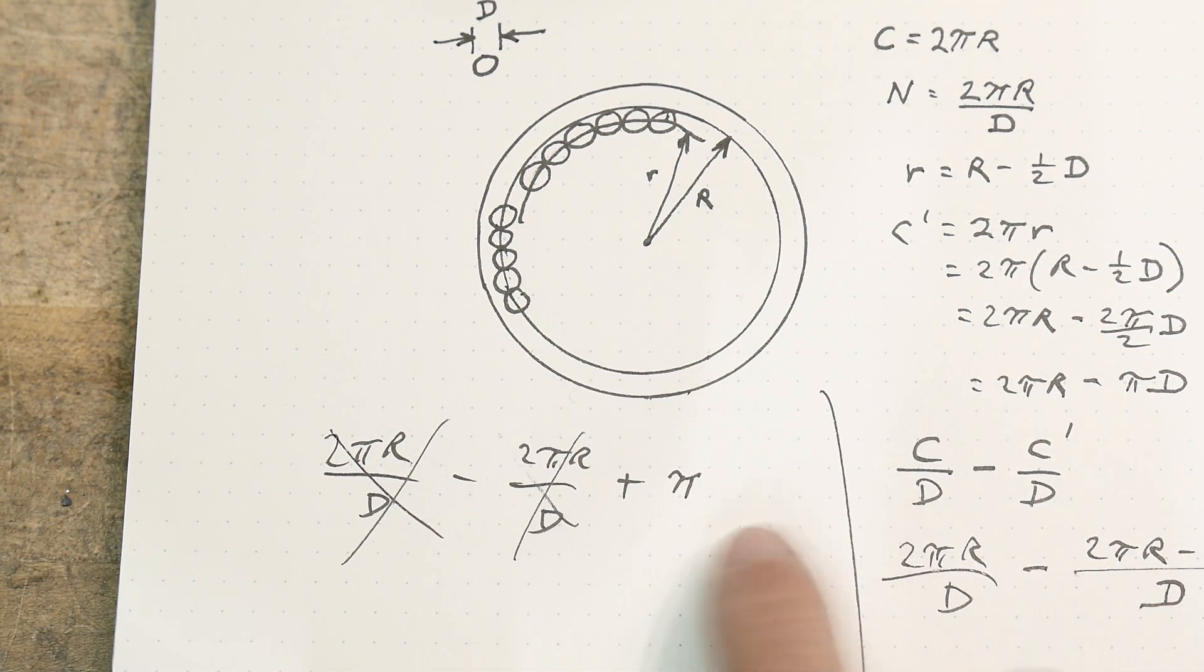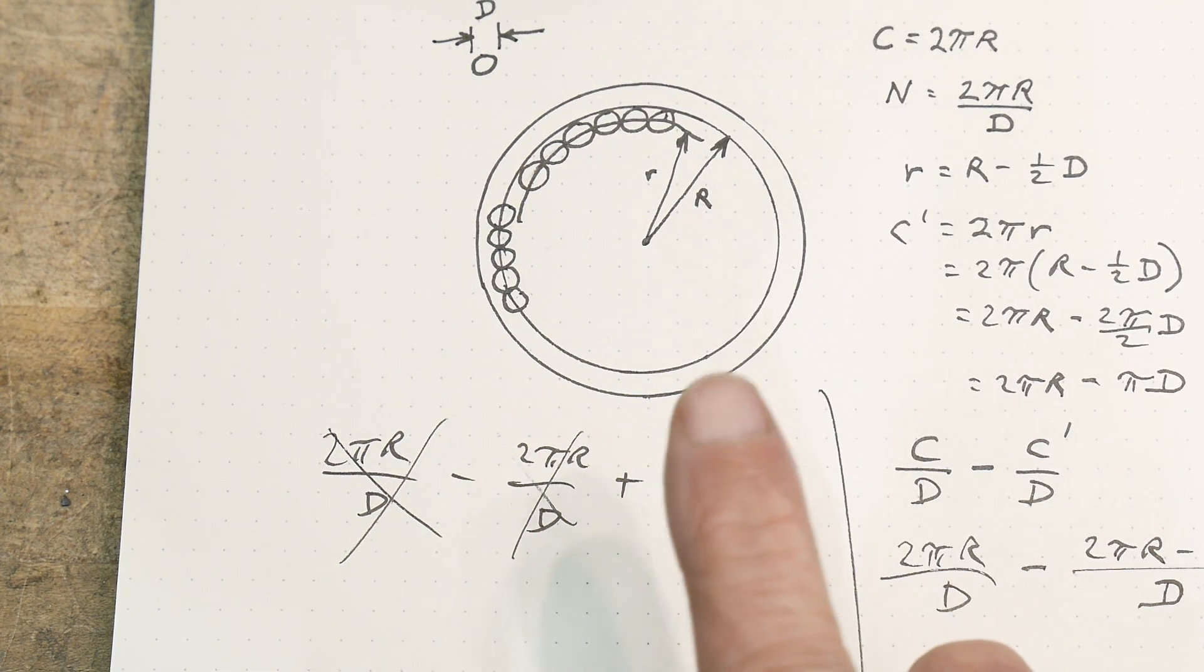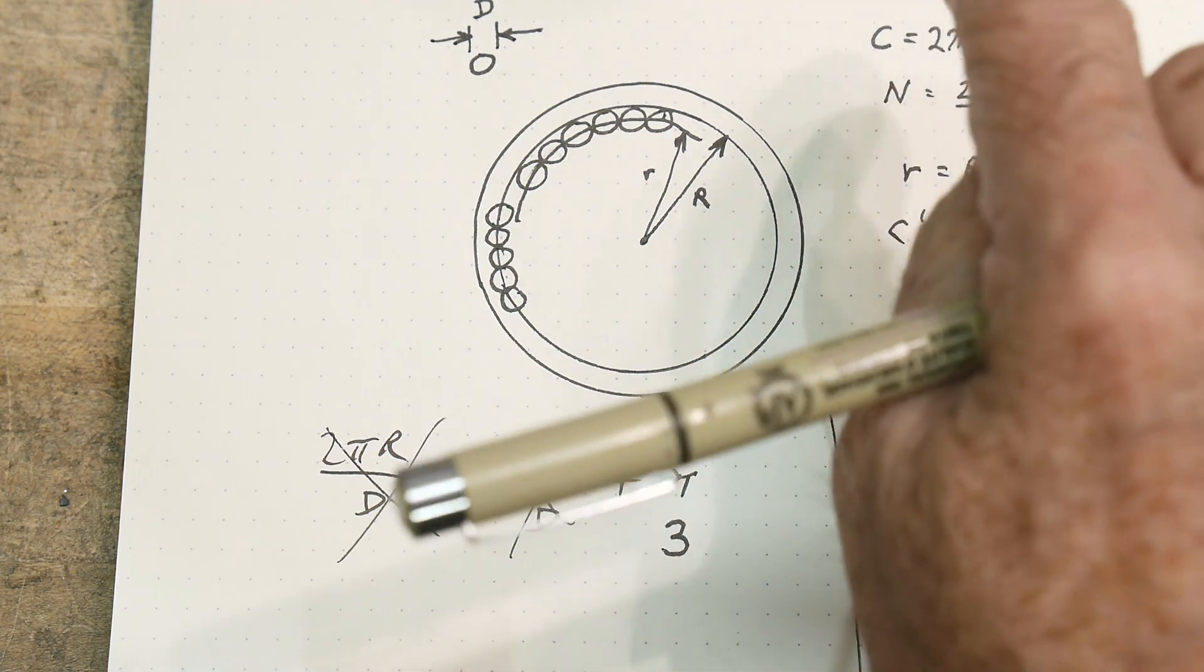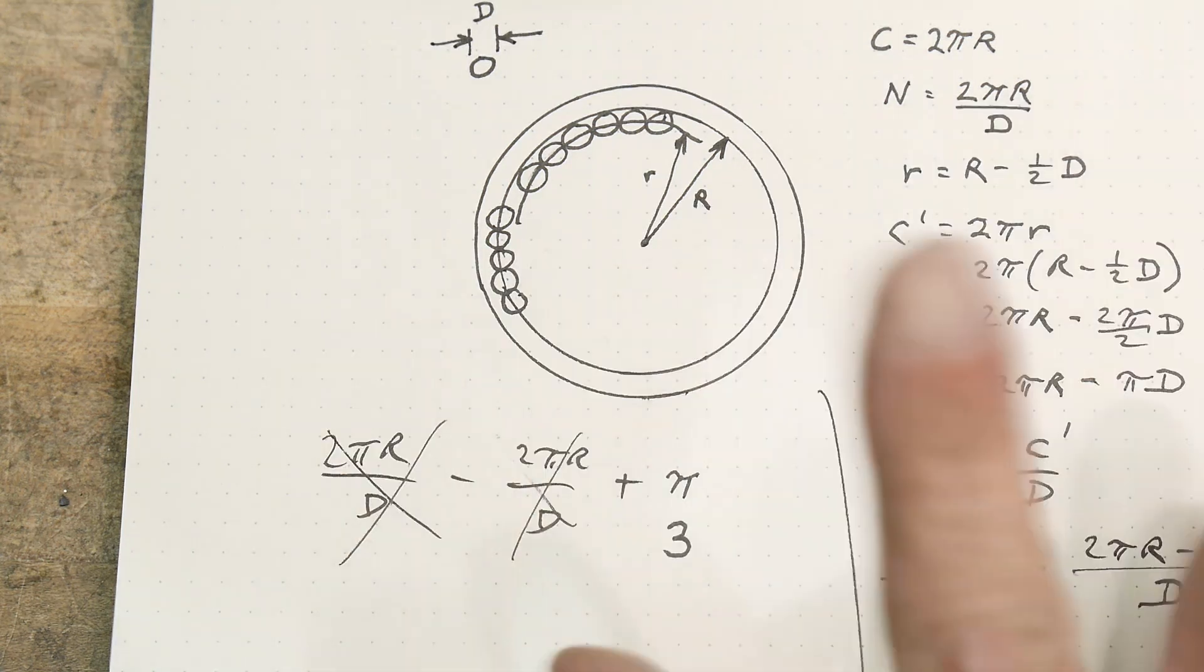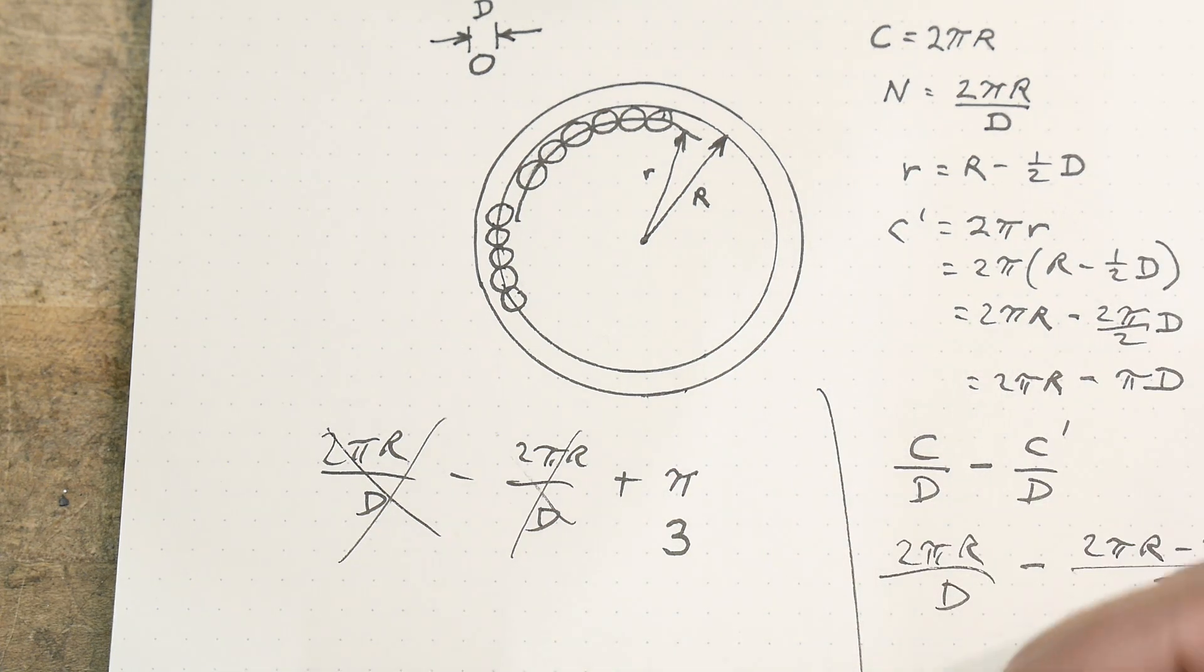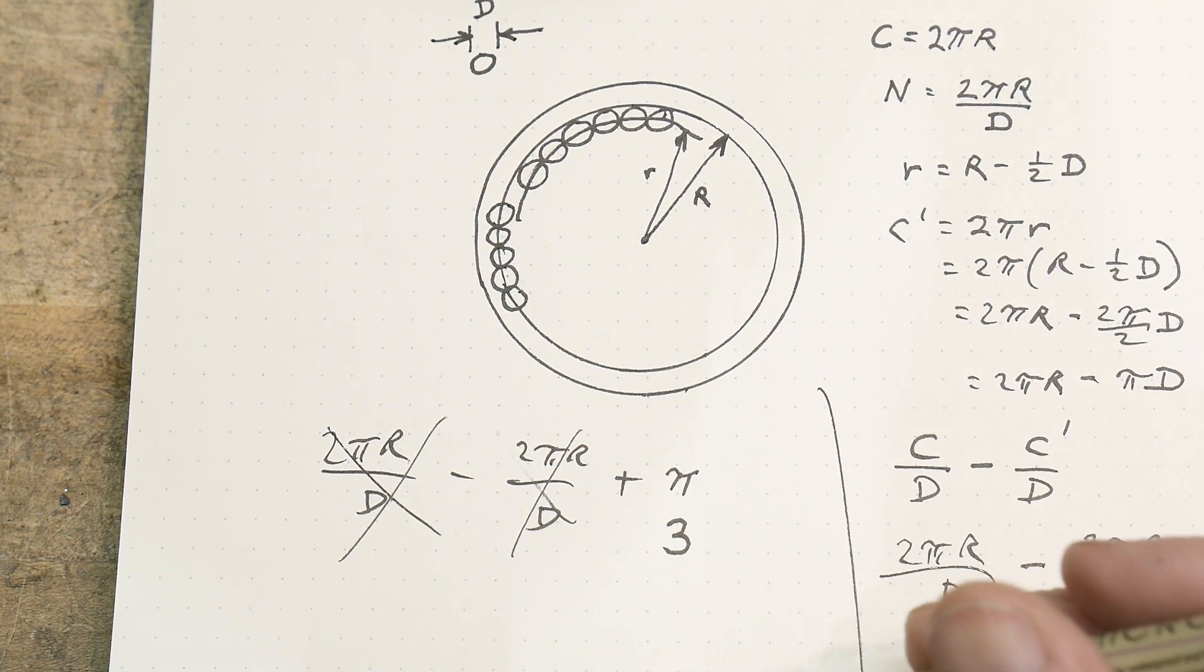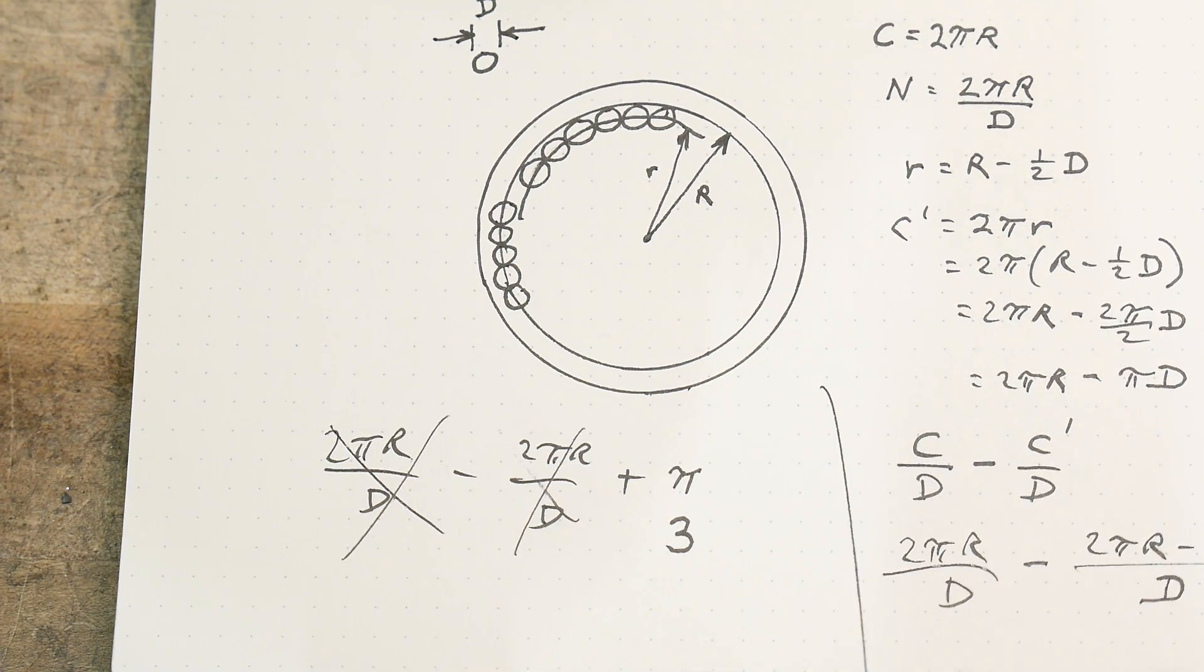So the number of turn differences between this case and this case is always π. And rounded to 3. So it doesn't matter what r is. It doesn't matter what d is. It doesn't matter anything. If you calculate it this way and you want to know it that way, you just say it's less than three less. Three more can go in this way. Three less can go that way. It's always three. Three. Which is just nuts. Anyway. So there's the proof.